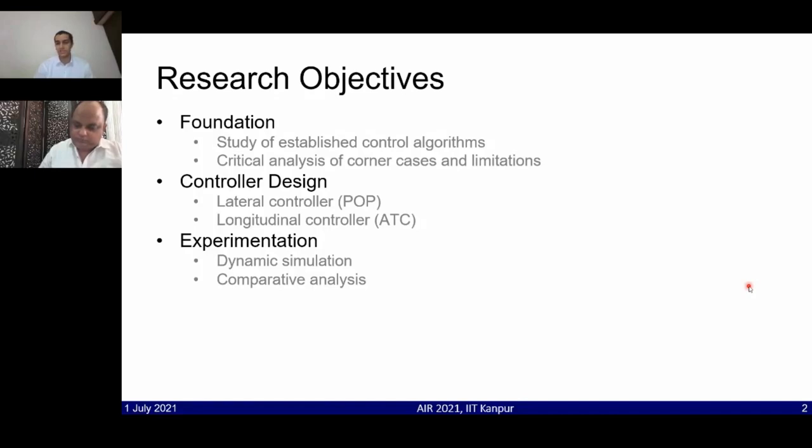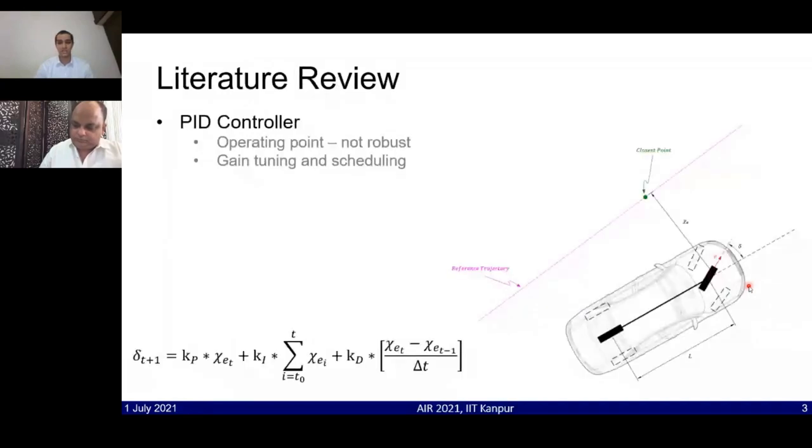Coming to the literature review, the first control method that comes to mind in terms of trajectory tracking is a simple PID controller. Although it has various advantages such as simplicity, the primary disadvantage is that it functions well only around the operating point for which the controller was tuned and therefore it is not a very robust technique.